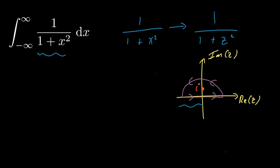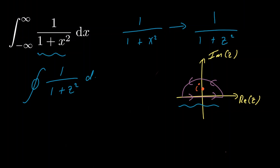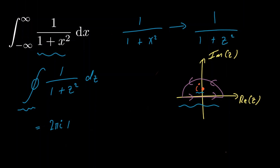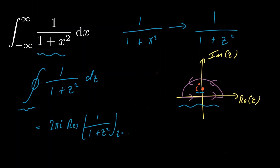Now we need to choose our contour. Notice that our loop here contains the pole at z equals i. So we have 1 plus z², and this sign here is just indicating that we're integrating over a loop. As our function is an analytic function with a simple pole, we can use the residue theorem to calculate our integral. Using the residue theorem we have 2πi multiplied by the residue of 1 divided by 1 plus z² evaluated at our pole i.